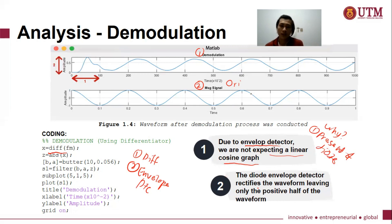And if we take a look at number one, that is why due to envelope detector, we are not expecting a linear cosine graph. So moving on, when we take a look at the message signal, we are actually having the original signal with amplitude of negative and positive signal, one to negative one, right?